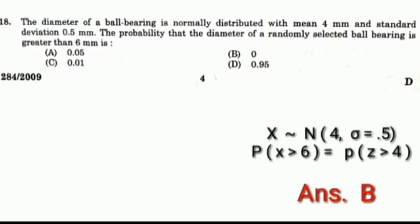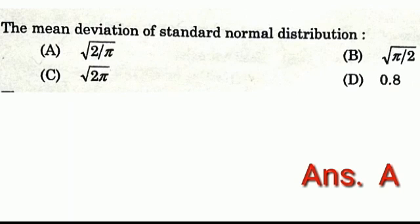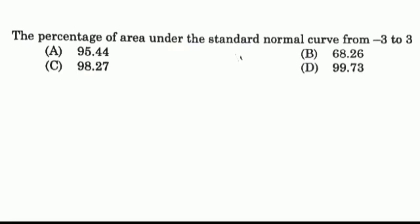Question 19 (labeled as Q98): The mean deviation of the standard normal distribution — Options: A: √(2/π), B: √(π/2), C: √(2π), D: 0.8. Answer: Option A, √(2/π).